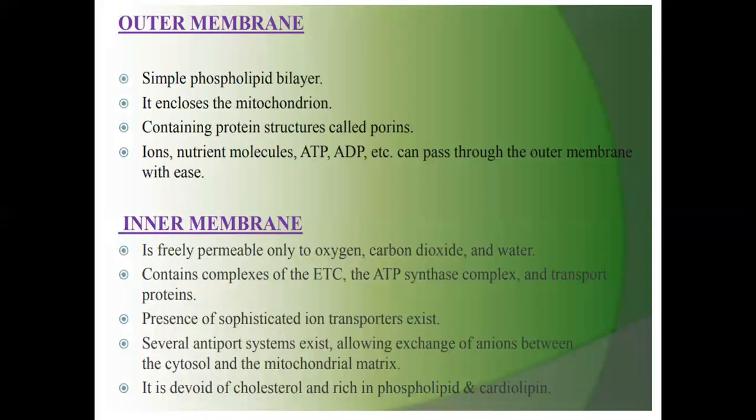The outer membrane is a simple phospholipid bilayer that encloses the mitochondria. This outer membrane covers all the components of mitochondria like a cell wall. It contains protein structures called porins. Ions, nutrients, molecules, ATP, ADP, etc. can pass through this outer membrane with ease.